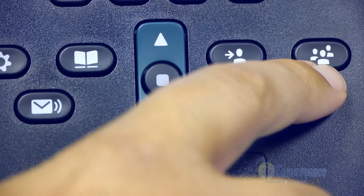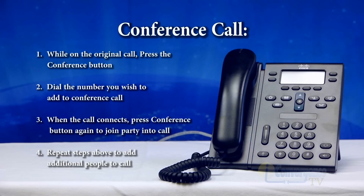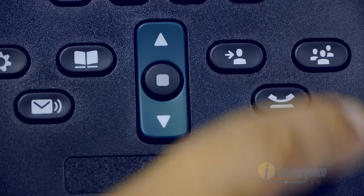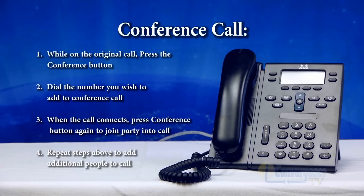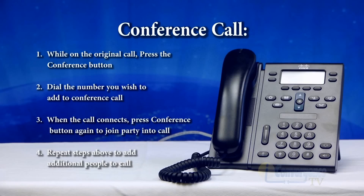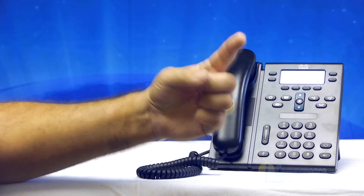The next button, which looks like it has three heads on it, is for three-way calling or conference calling. The process is very similar to transferring a call — you start by pressing the conference button and end by pressing the conference button. So if you have somebody on the line and want to conference in a third party, you press the conference button, which puts the first person on hold and gives you a dial tone. You can then dial an internal extension or external number. Once they answer, press the conference button again to join all three onto one call.